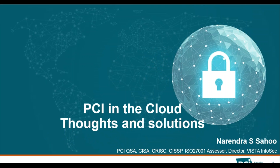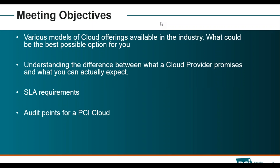The subject we are looking at today is PCI DSS in the cloud: parts and solutions. The meeting objectives include looking at what various models are available in the industry and what could be the best possible solution for you. I won't be suggesting whether Amazon is better or Google is better, but what options are available and what could be the best fit for your industry.